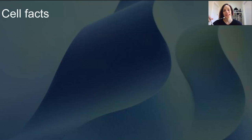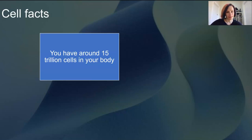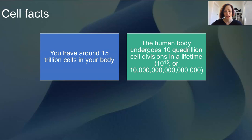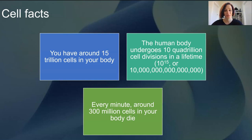Let's start with some quick cell facts. You have 15 trillion cells in your body. The human body will undergo about 10 quadrillion cell divisions in a lifetime, and every minute around 300 million cells in your body will die.